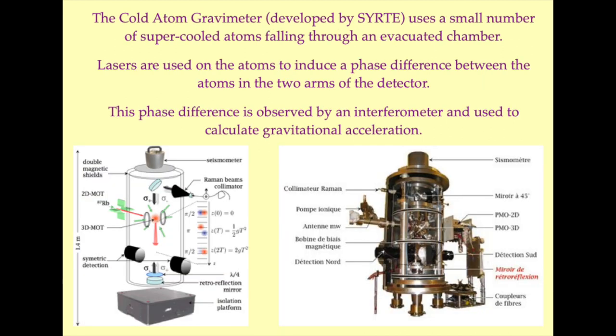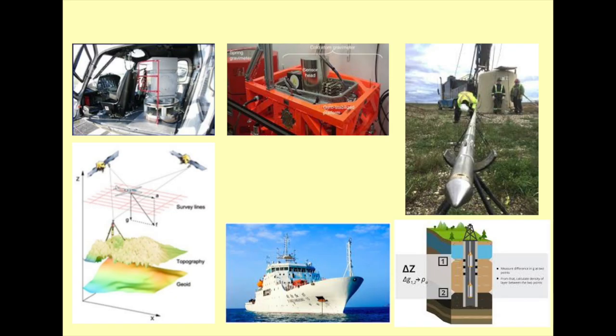Cold atom gravimeters release small numbers of supercooled atoms into the test chamber. As they fall, the atoms are subjected to a series of laser pulses, and the phase differences between the atoms in the two collection chambers at the bottom of the instrument are used to infer the rate of acceleration. Gravimeters are commonly deployed in field campaigns to determine gravitational anomalies as a function of instrument position.